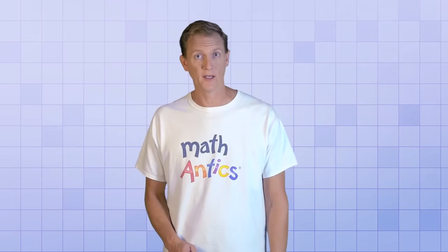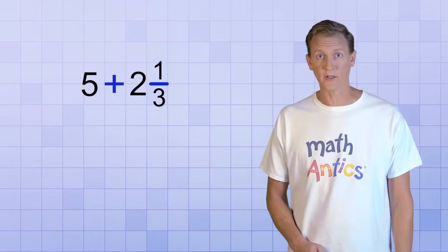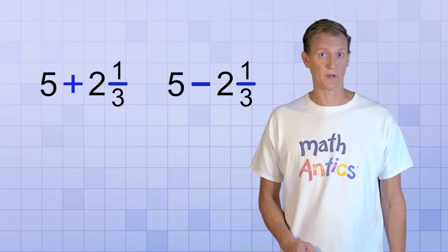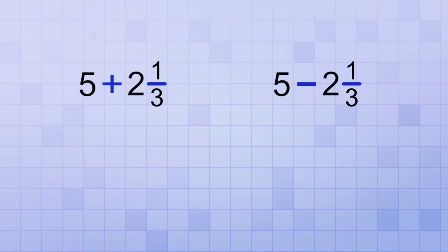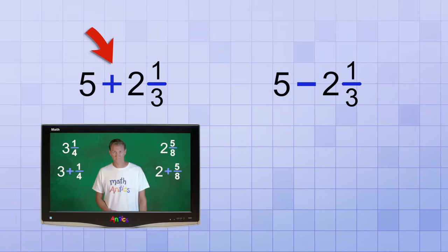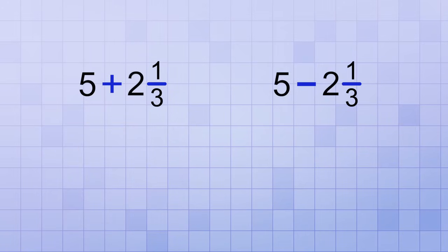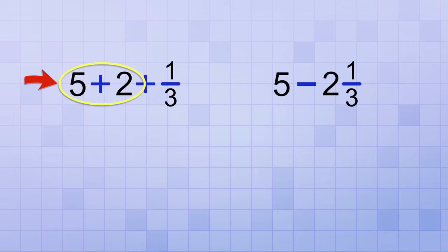Okay, to see why subtracting mixed numbers is trickier than adding them, let's have a look at two problems side by side. 5 plus 2 and 1 third and 5 minus 2 and 1 third. We learned how to do problems like the first one in the previous video about adding mixed numbers. Since 2 and 1 third just means 2 plus 1 third, we learned that we could rewrite the problem like this, and simply add up the whole number parts to get the whole number part of the answer. 5 plus 2 is 7, so the answer is 7 and 1 third.